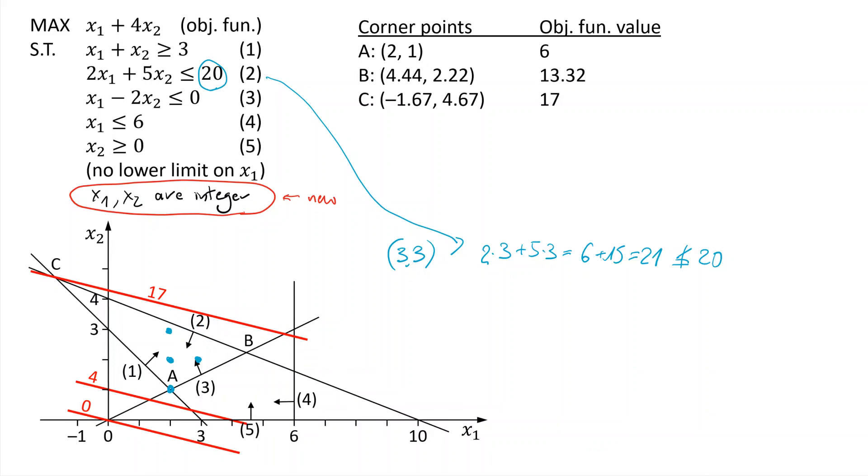We're considering constraint 2 and we're thinking of point (3, 3). Let's test it. Does (3, 3) satisfy this constraint? It's 2 times 3, 2 times x1 plus 5 times x2. So x2 is also 3. That's 6 plus 15, that is 21. No wonder we were not sure. It is very close to the right-hand side value 20. But it is not less than or equal as the constraint requires. So in fact, this point here is actually above the line and therefore it is not feasible. I should not plot it.